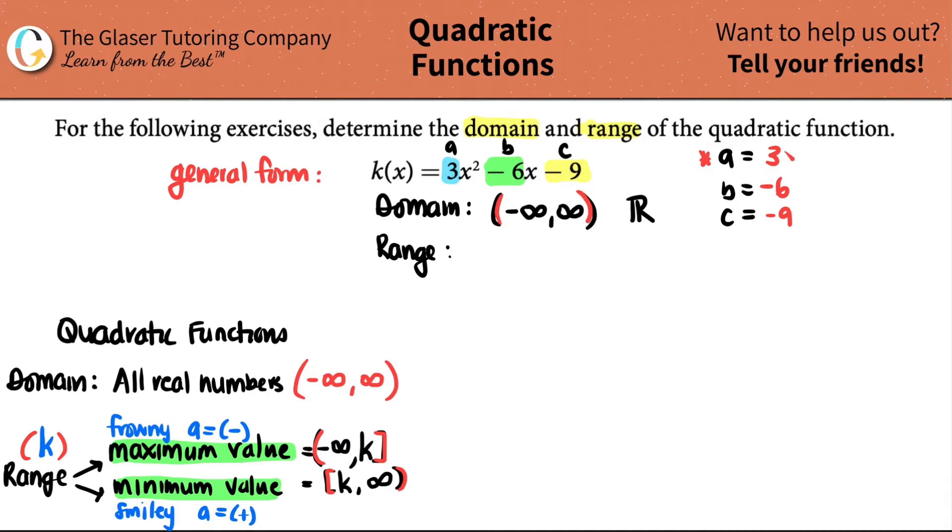I have a B value of negative 6. And I have a C value of negative 9. Key in on the A value. The A value is 3. It's a positive. So I know that I have a min value. I have a minimum value. So my range is going to follow this type of idea. Bracket a number, which we don't know. It is not the A value. It's the K value. And then comma, infinity, parenthesis.